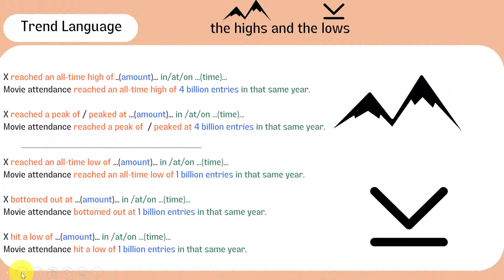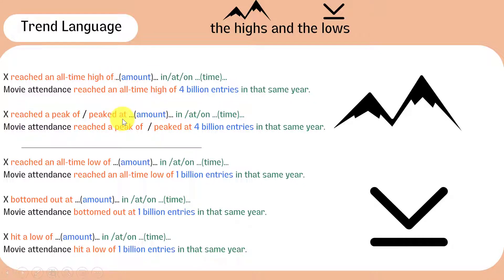The following structures can be used to describe the highs and lows. See the different prepositions in the examples: 'reached an all-time high of,' 'reached a peak of,' 'peaked at,' 'reached an all-time low of,' 'bottomed out at,' and 'hit a low of.'